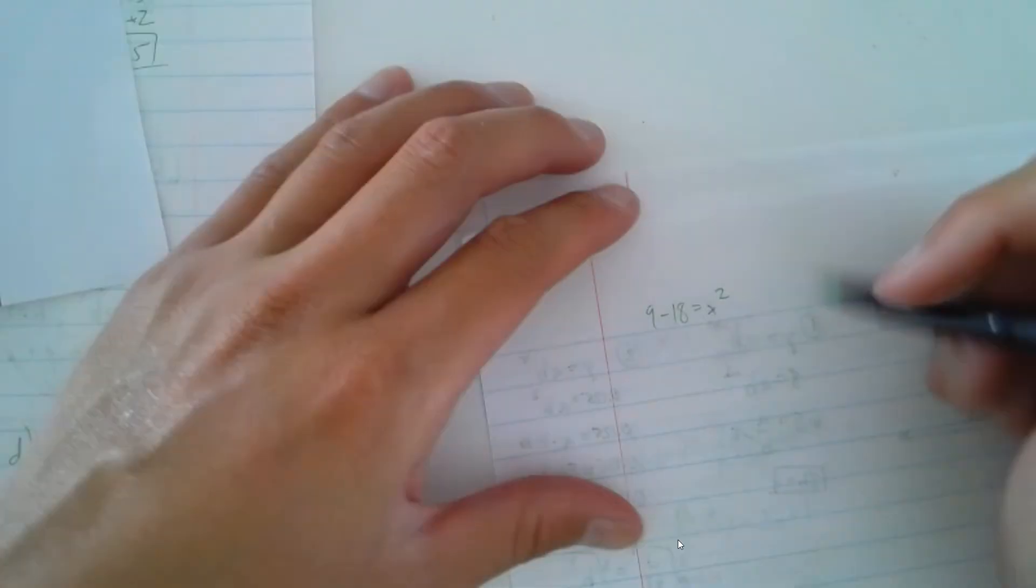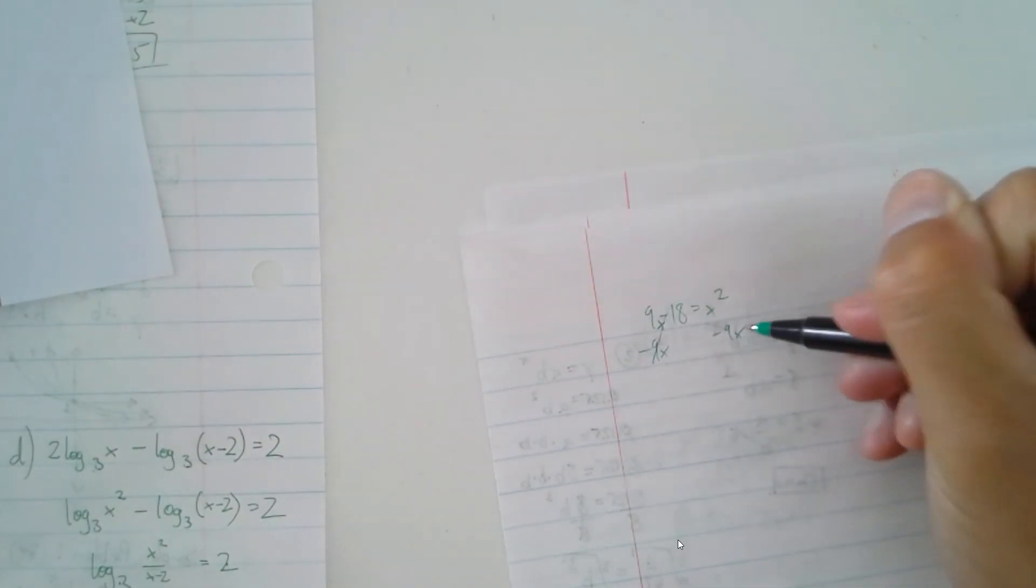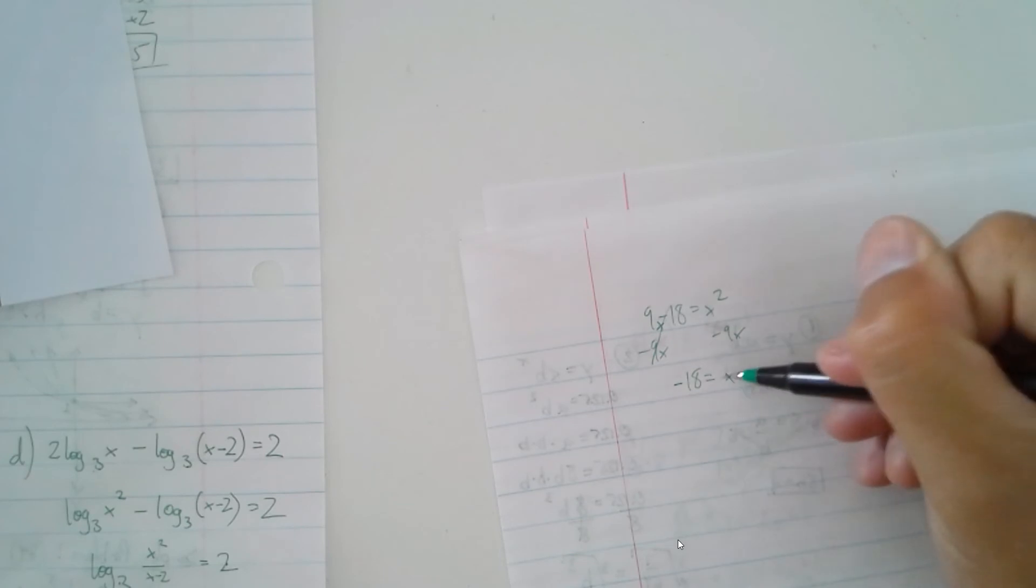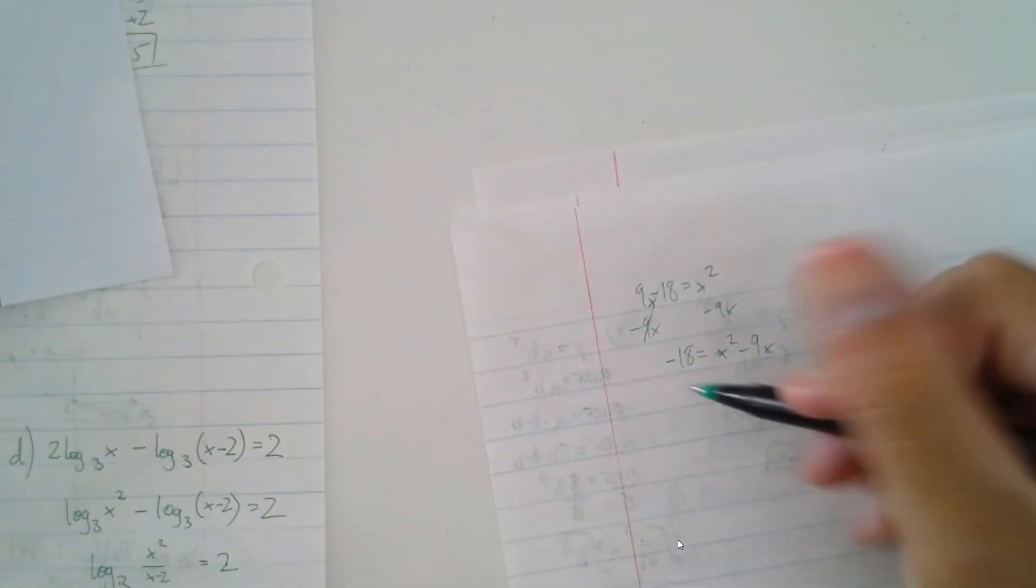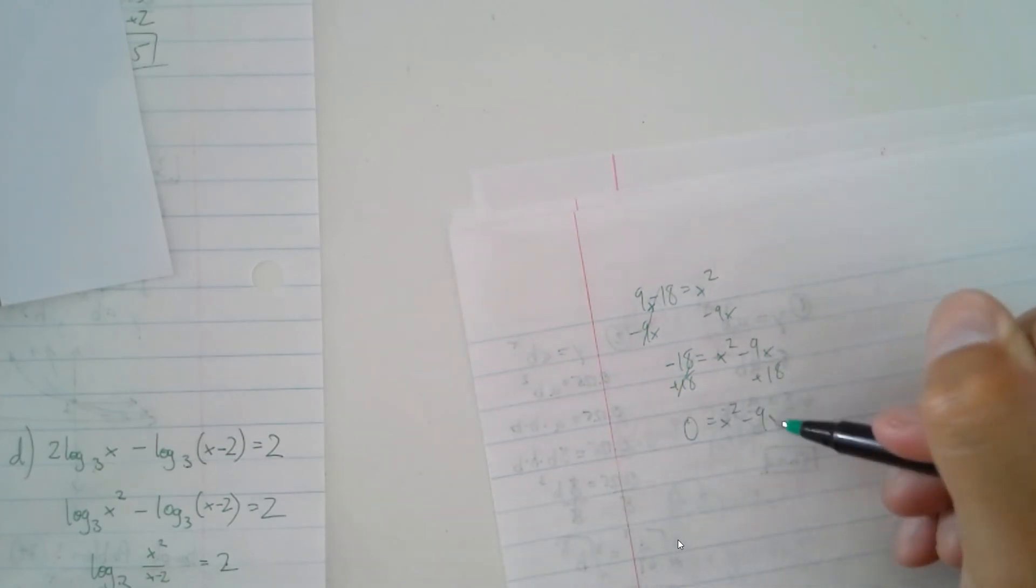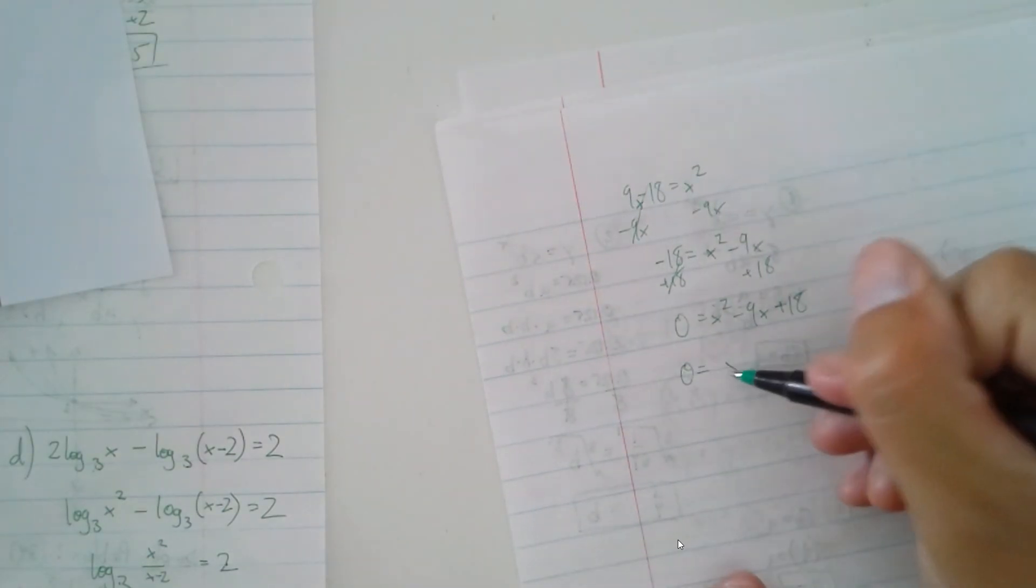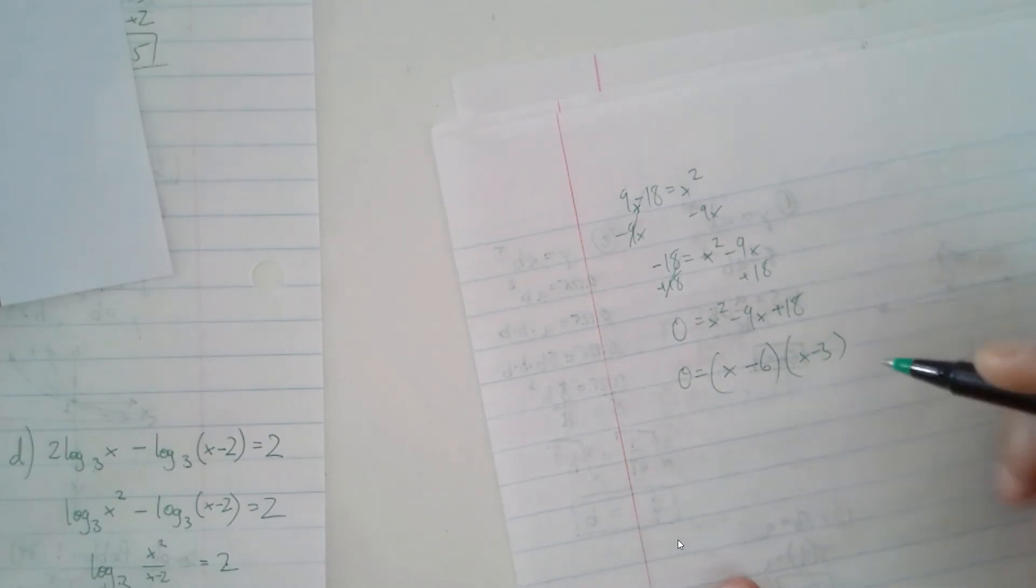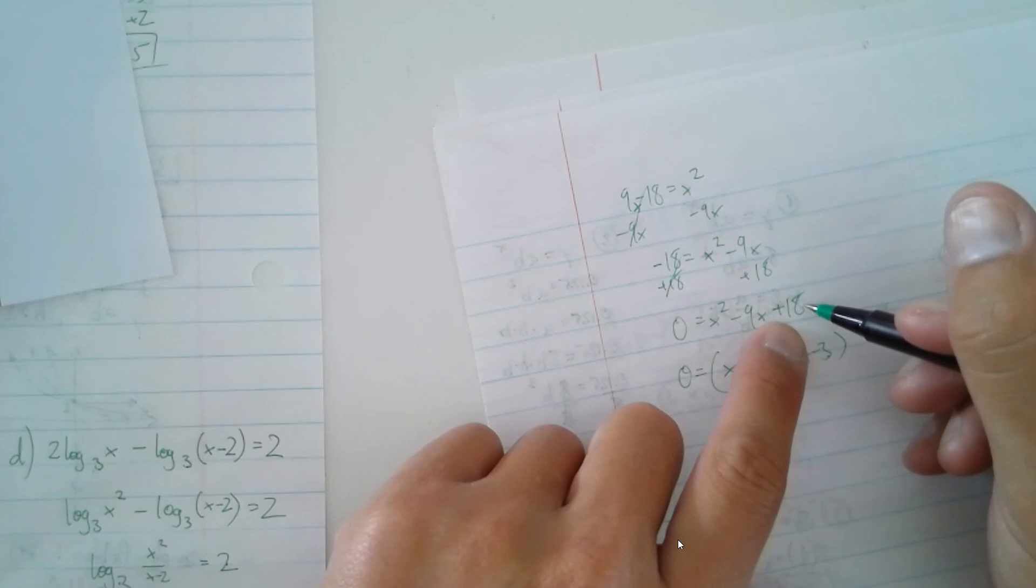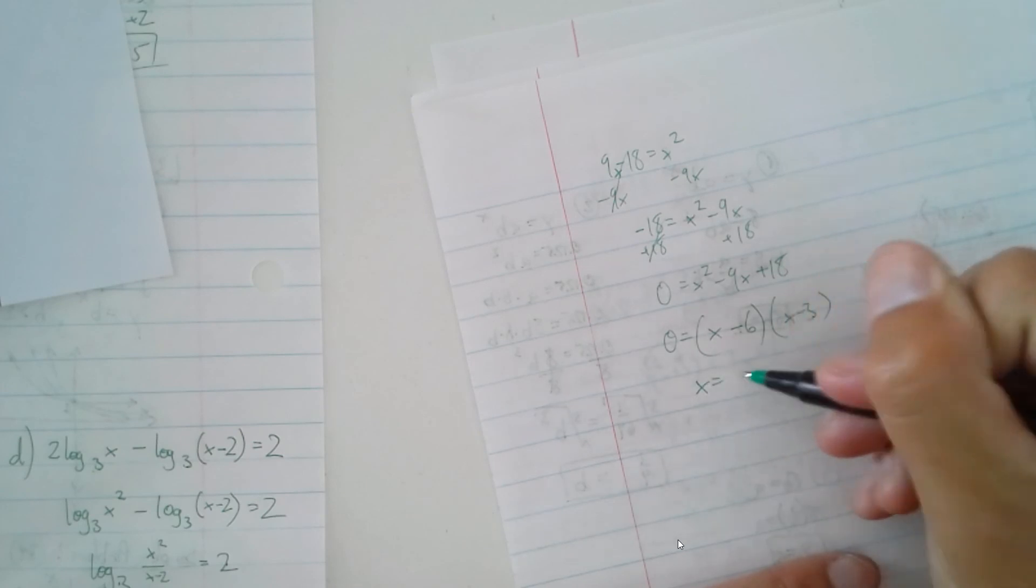Let's set this equal to 0. Let's subtract the 9x from both sides. So you have minus 18 equals x squared minus 9x. You add 18 to both sides. You have 0 equals x squared minus 9x plus 18. And then you factor this out into two binomials. I know that to be minus 6 and minus 3, because I know that both these numbers will multiply up to 18, but they will also add up to minus 9. So then you know that x equals 6 and 3.